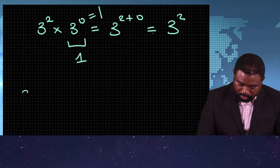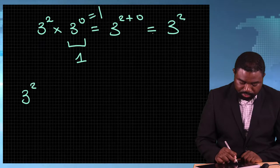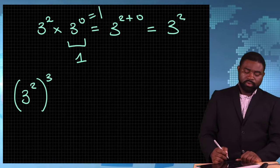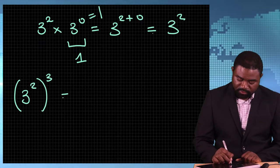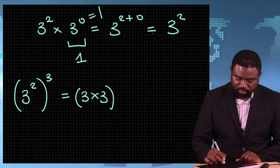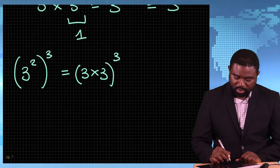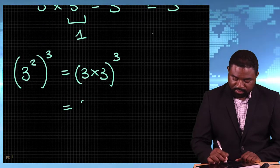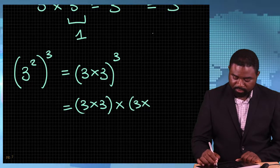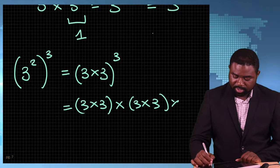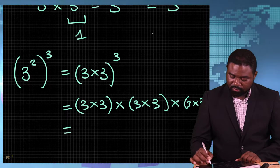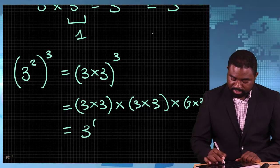How about 3 raised to the power 2, all of these raised to the power 3? This is the same as 3 times 3, raised to the power 3, which is the same as 3 times 3, multiplied by 3 times 3, multiplied by 3 times 3. That gives us 3 raised to the power 6.